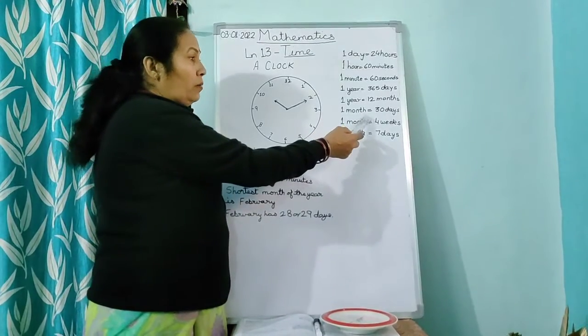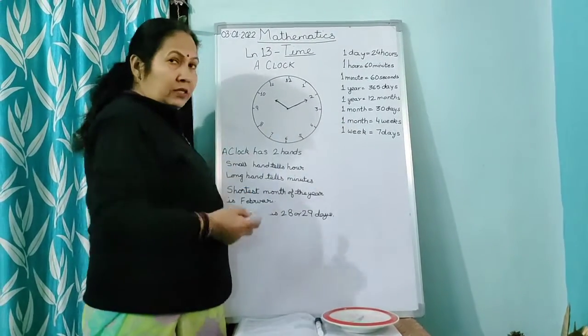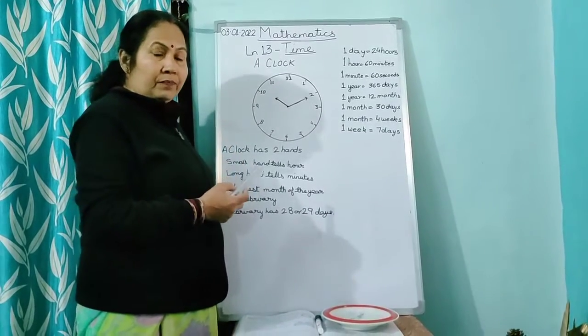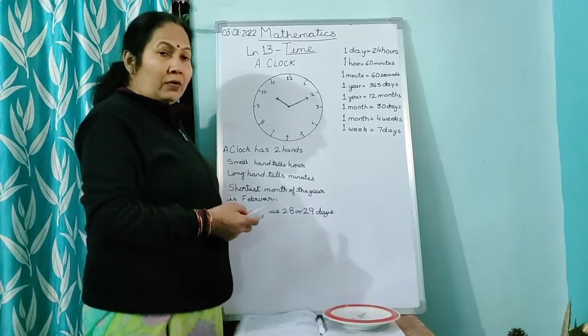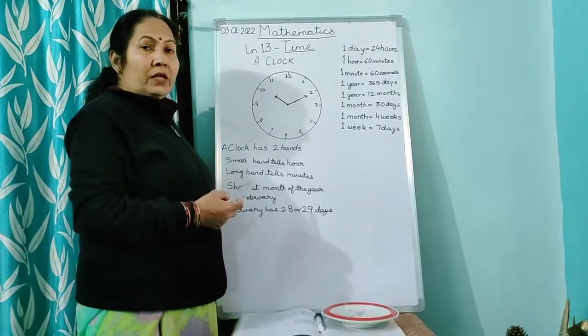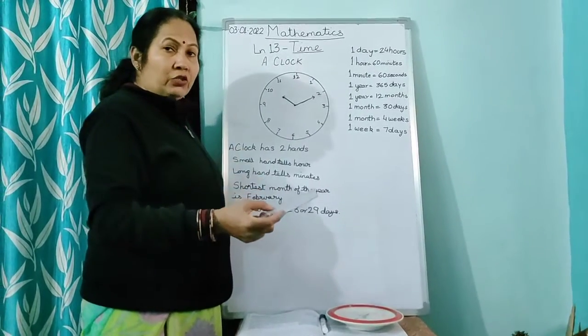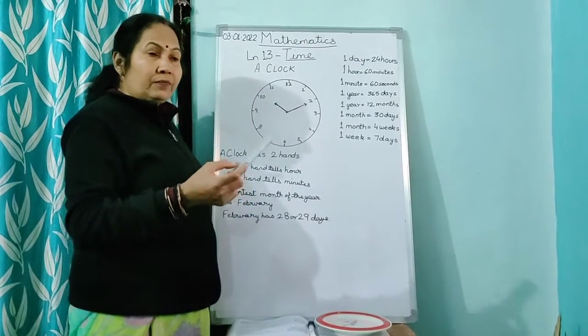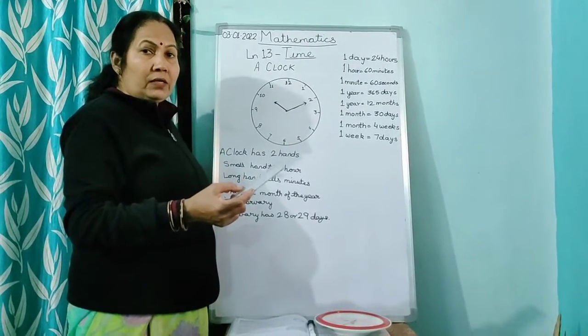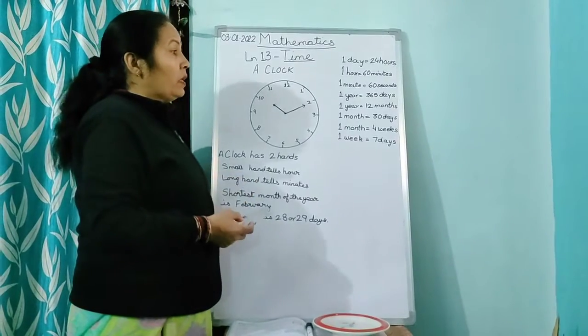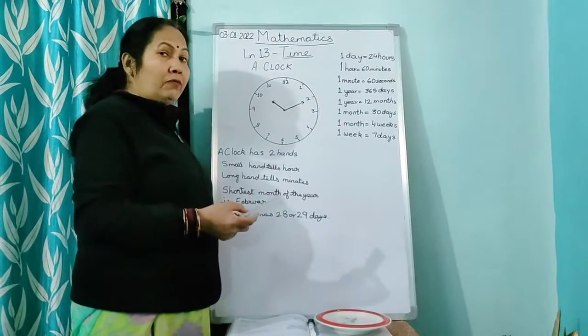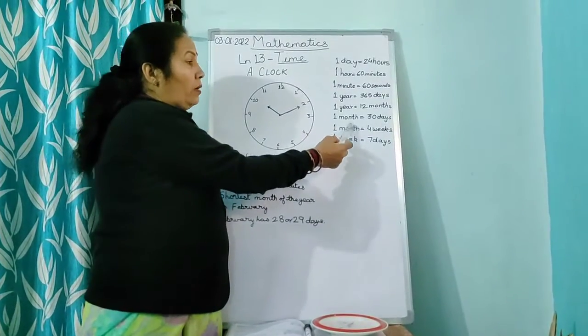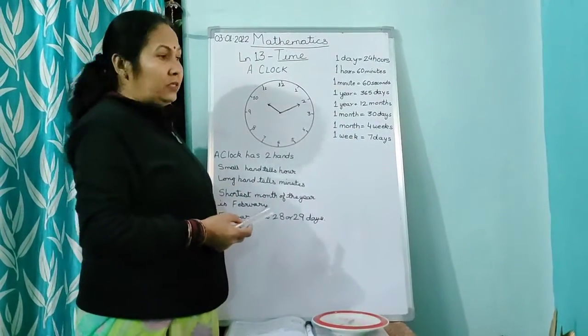Now, in 1 month you have 30 days. But there are some months in which you have 31 days. That is, January you have 31 days, then in March you have 31 days, May you have 31 days, July you have 31 days. So like this, children. But when you have to calculate, then you will see that 1 month is equal to 30 days.